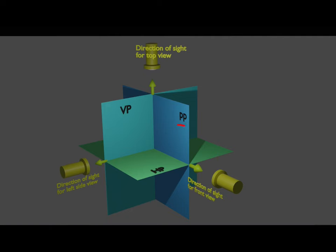The profile plane is perpendicular to both the vertical plane and the horizontal plane. Remember that the vertical plane and horizontal plane are called principal planes, and the profile plane is a reference plane. We always get the top view on the horizontal plane, the front view on the vertical plane, and the side view on the profile plane.